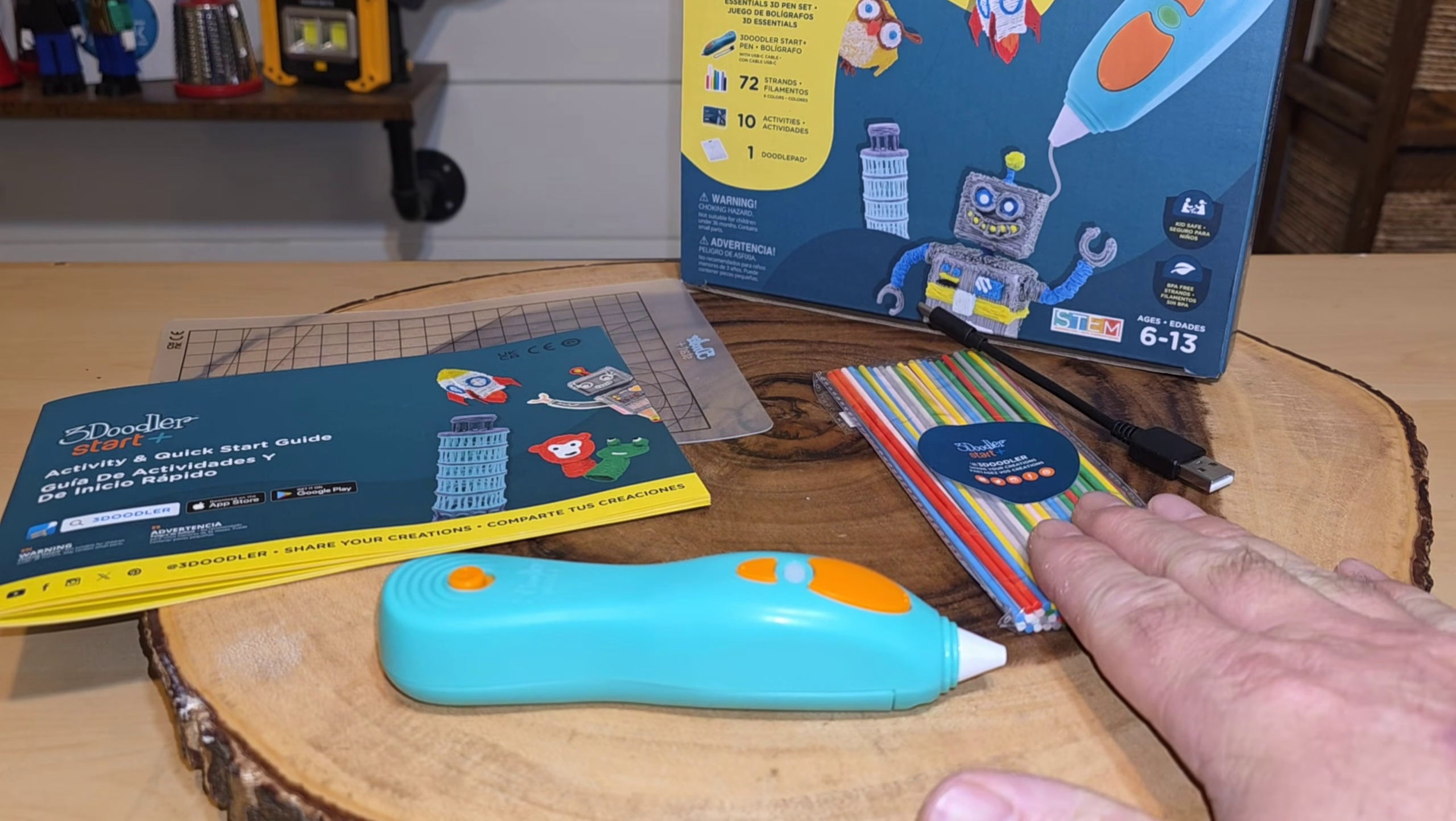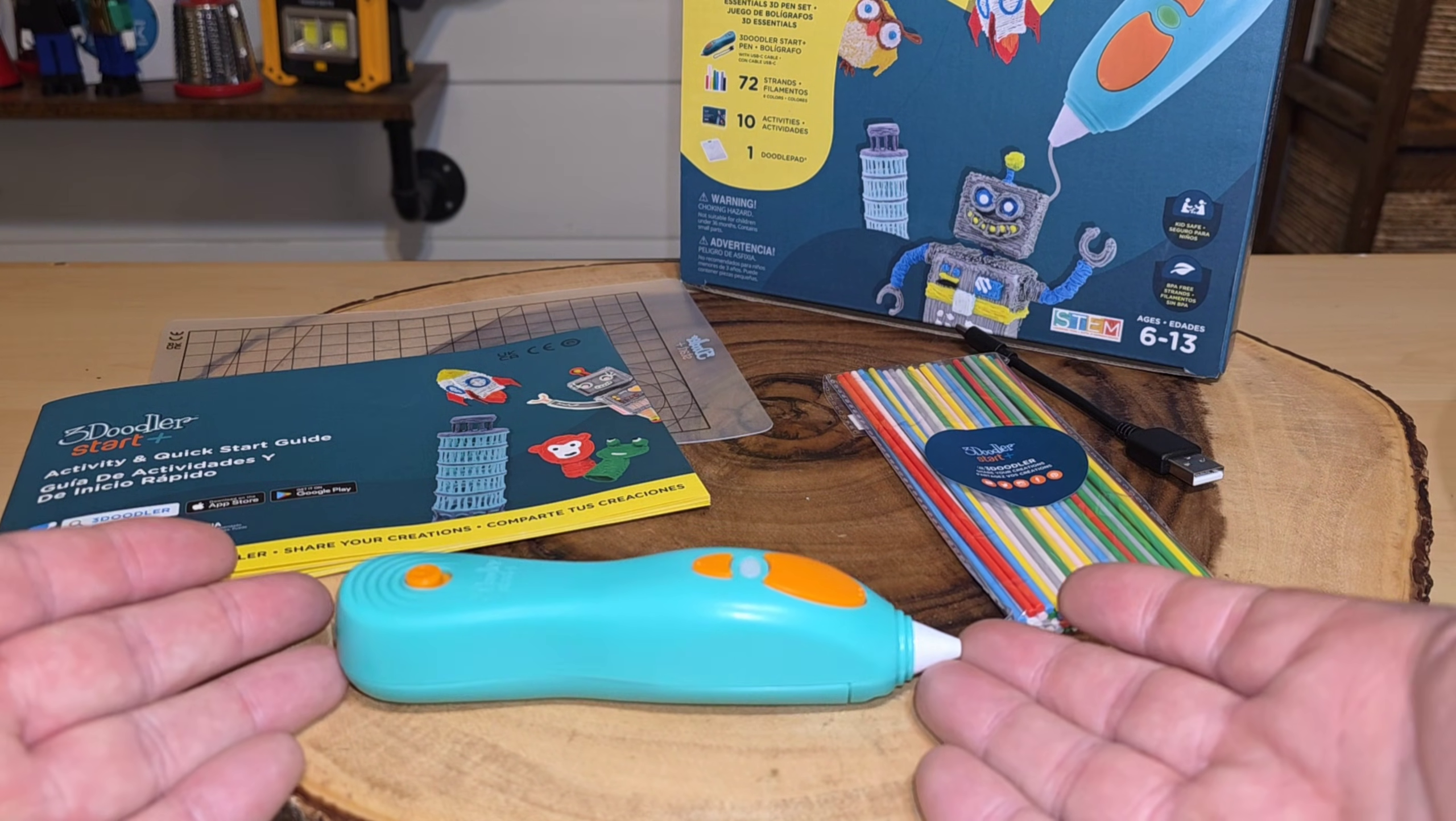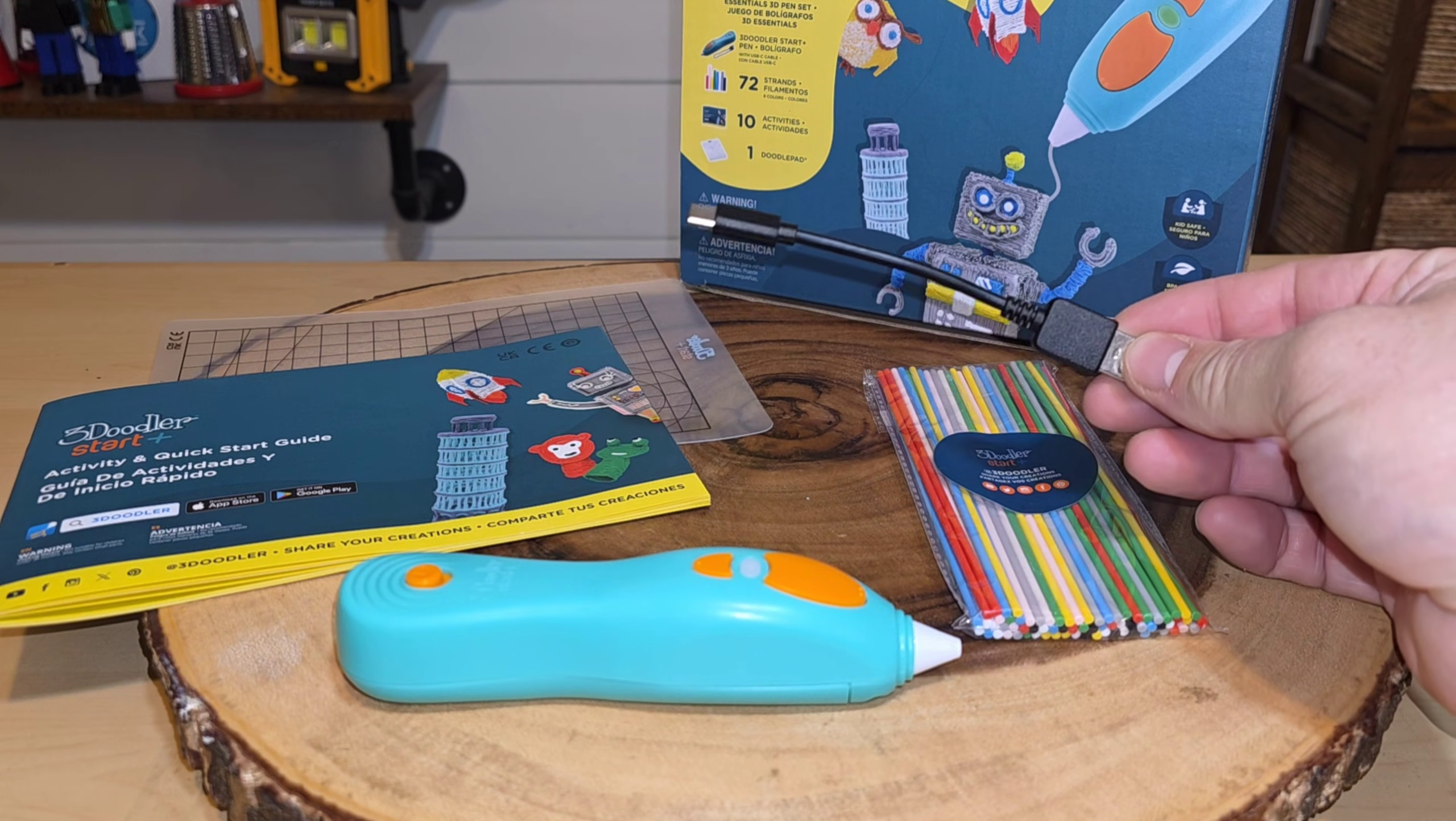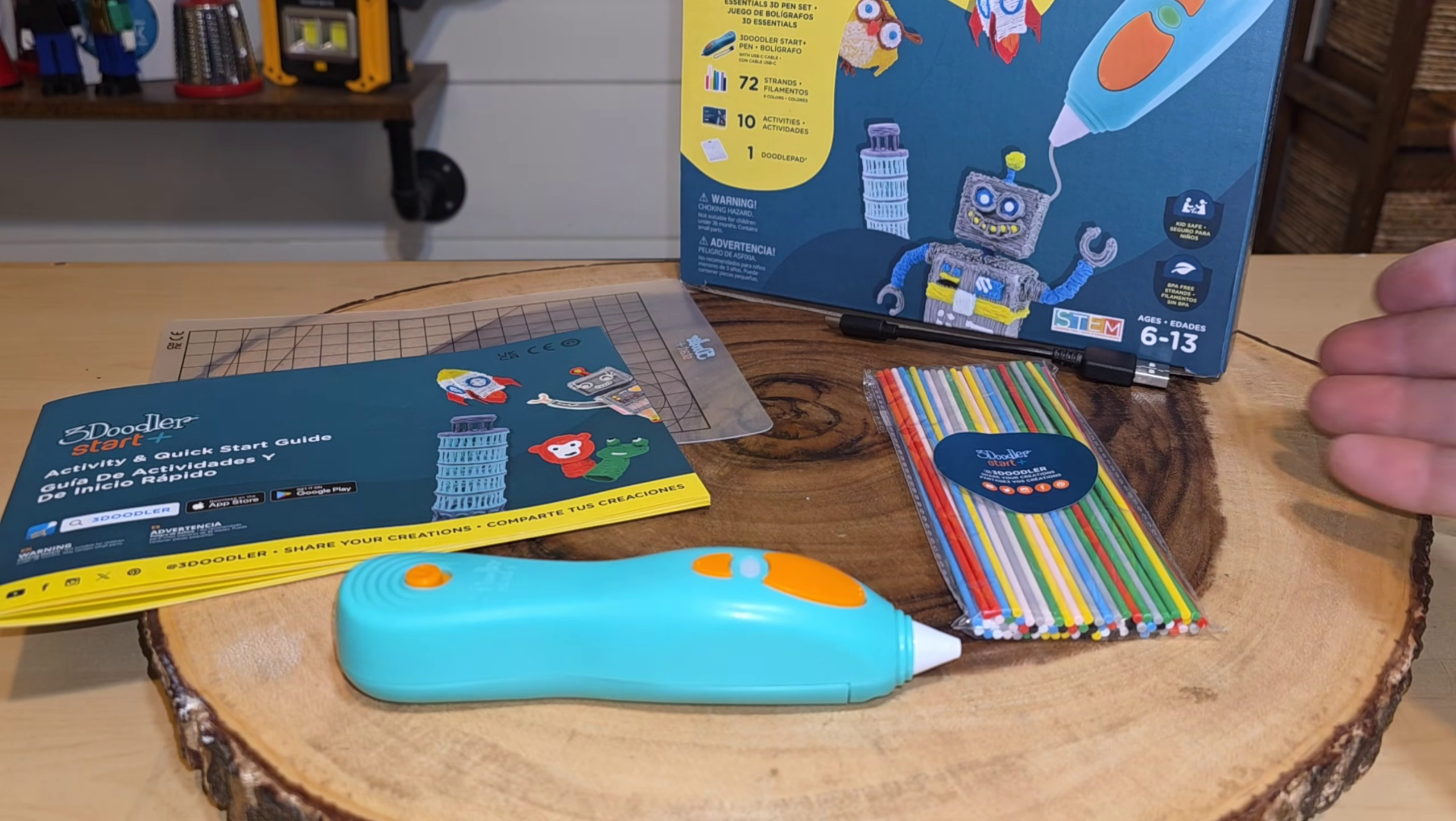We have our 72 strands of filament. Of course, right in the middle is our 3Doodler Start Plus, the 3D printing pen. They spared no expense with our charging cable - this is a full five inches long. I'm not sure why they make such small charging cables. That is USB-C to USB-A, not included in this packet.